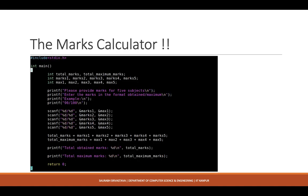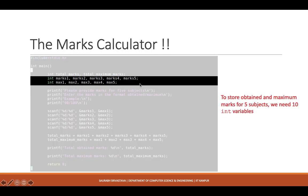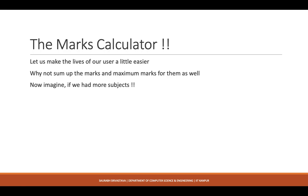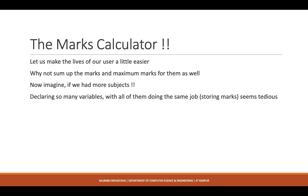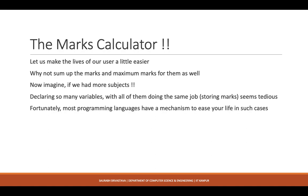In this simple program, we have two variables: total marks and total maximum marks. Assuming the user has five subjects, I have marks1 through marks5 as five integer variables, and max1 through max5 to store the maximum marks for each subject — ten variables total. But imagine if we had more subjects: for five subjects we needed ten variables, and it becomes tedious to create so many variables when almost all of them are doing exactly the same job.